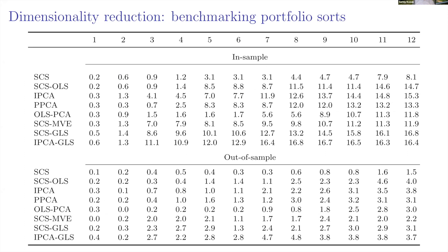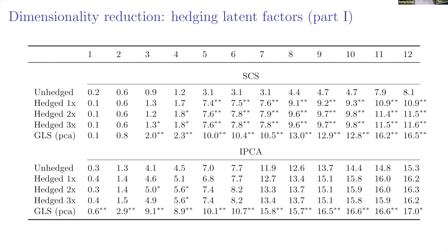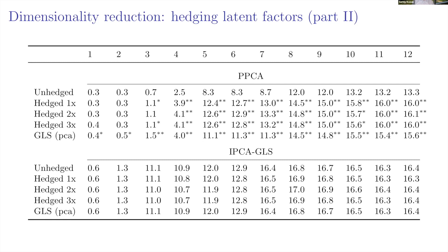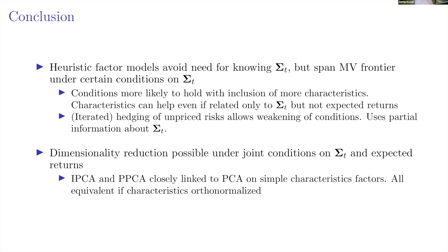These results carry out of sample. On dimensionality reduction, we implement many different models — shrinking the cross-section, IPCA, PPCA — and see evidence similar to what's in those papers. Models that do IPCA-type rotation tend to give higher Sharpe ratios. Hedging these models: for univariate factors there's benefit; for IPCA-type factors less benefit; for GLS-type factors again no benefit — consistent with theory.